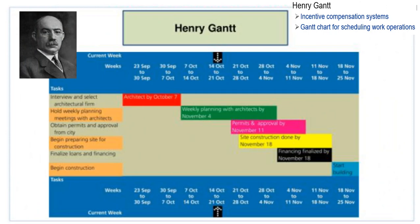Henry Gantt: a Gantt chart is a type of bar chart that illustrates a project schedule, named after its inventor Henry Gantt, who designed such a chart around 1910–1915. Modern Gantt charts also show the dependency relationships between activities and current schedule status.